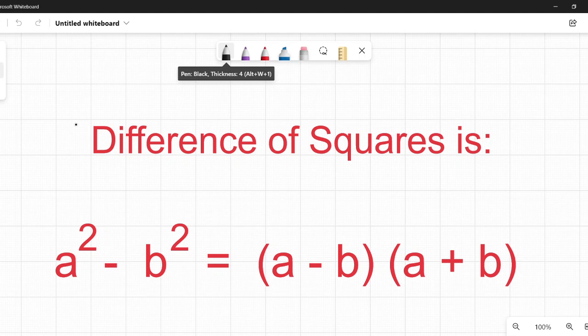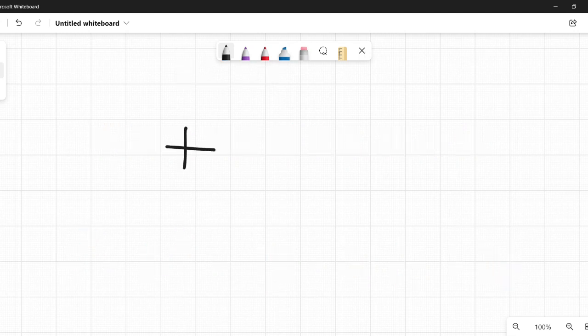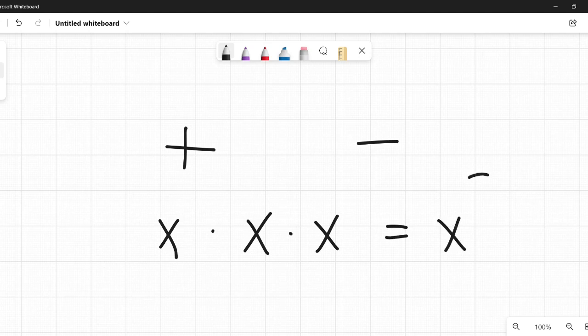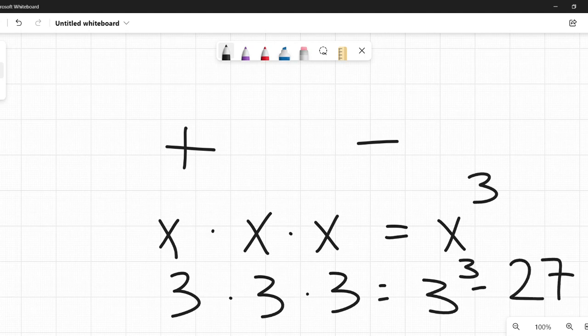So sum and difference, when we say that, sum is the fancy pants word for adding. Difference is the fancy pants word for subtracting. And a cube is any number or variable that is multiplied by itself three times. So x times x times x would be x cubed. 3 times 3 times 3 would equal 3 cubed or 27.